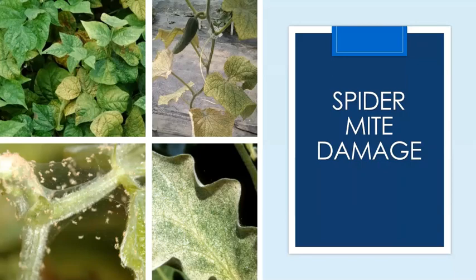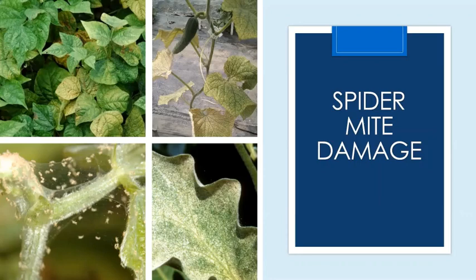That covers the insect and bug-related pest issues for today. There are many more pests I didn't have time to cover — such as the squash vine borer. If you need help identifying a pest, you can contact me or use the resources at the end of the presentation. North Dakota State University has an entomology lab where you can submit pictures or even physical samples for identification, and for residential producers, that service is often free.